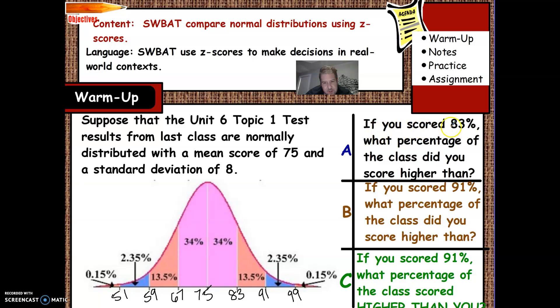Okay, so it says if you scored an 83%, that means you scored right here. What percentage of the class did you score higher than? Well, we know it's the 68% right here plus the 13.5% here. So I can just add up all the categories that are below the 83. So that's 68 plus 13.5 plus 2.35 plus 0.15, which adds up to 84%. So you beat 84% of the people.